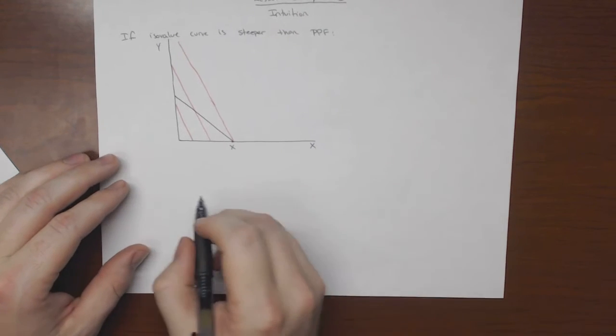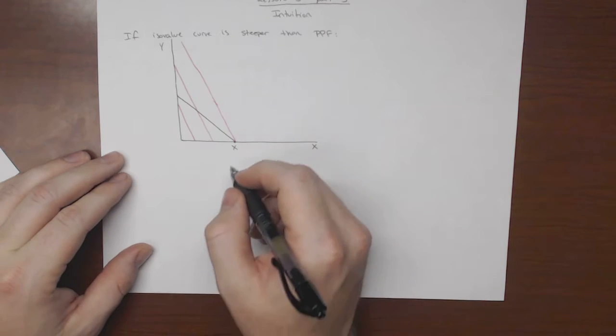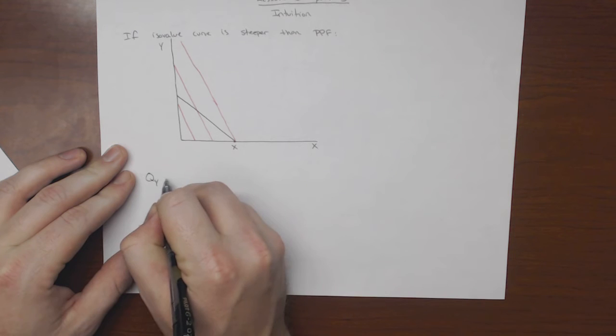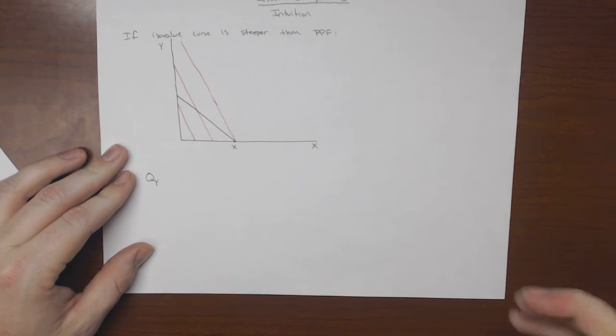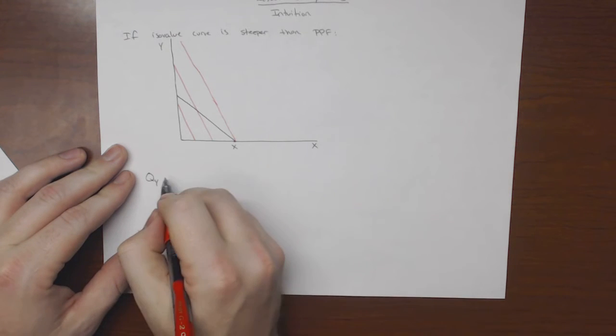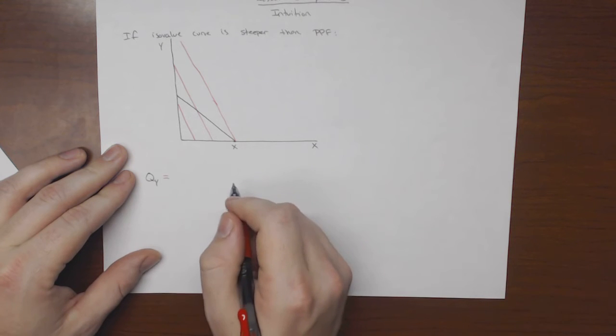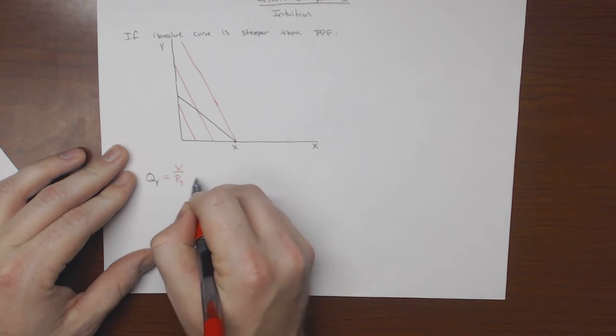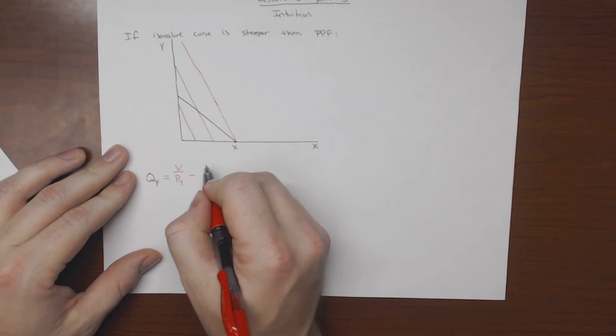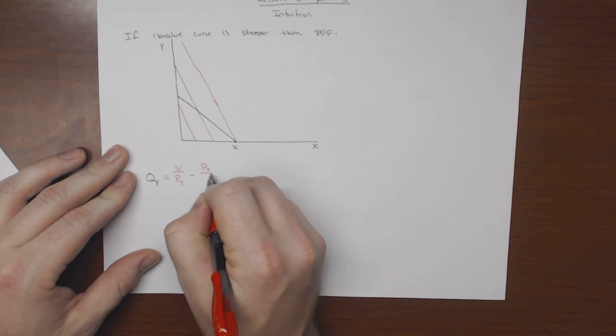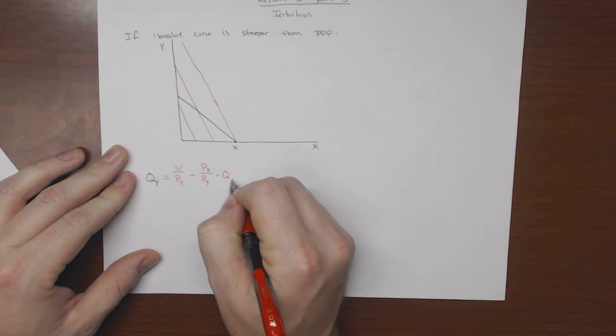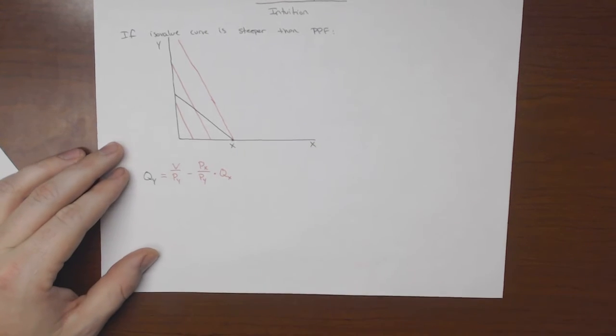So remember, we said that the slope of the iso value curve, qy, let's do this in red just so that we're consistent here, qy is equal to v over py minus px over py, all times qx.